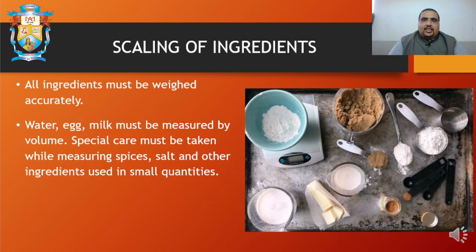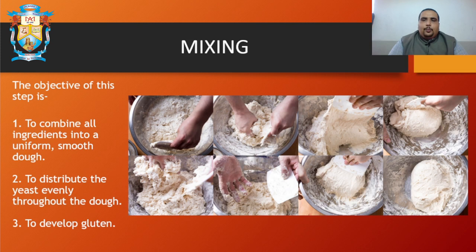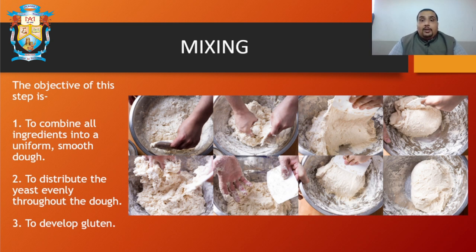The second step is mixing. Mixing is nothing but putting all the ingredients together to form a mass. As you see in the pictures, first the dry ingredients are mixed together so that they mix up evenly. Then little by little, water is added to form a soft dough — or whichever consistency is required for a particular bread. Some breads require hard doughs, some require a soft dough.